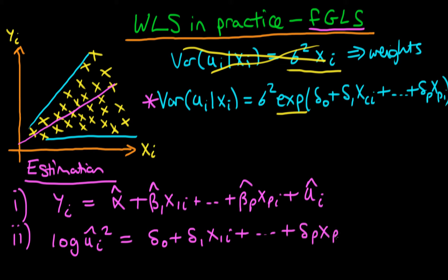Why have we used ui squared rather than just ui? Well, it's because of the fact that the variance of our error given xi is equal to the expectation of our error all squared given xi minus the expectation of ui given xi.